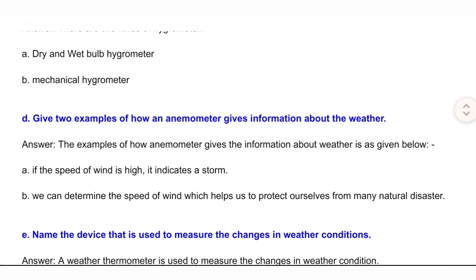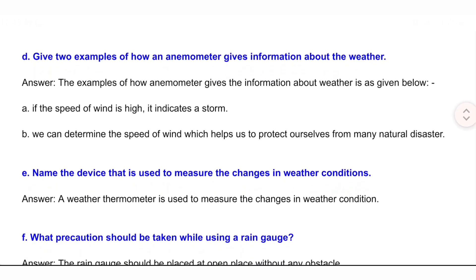C: What are the two kinds of hydrometer? Answer: There are two kinds of hydrometer — a dry and wet bulb hydrometer, and a mechanical hydrometer. D: Give two examples of how an anemometer gives information about the weather. Answer: A: If the speed of wind is high, it indicates a storm.